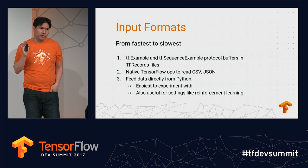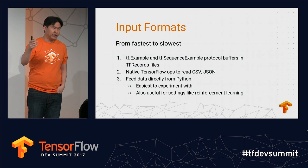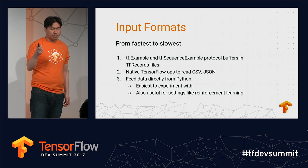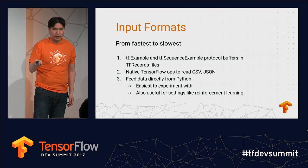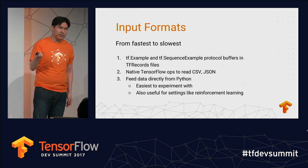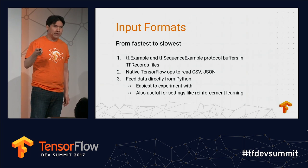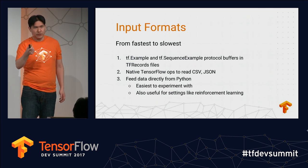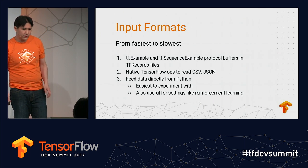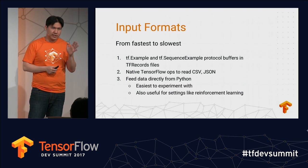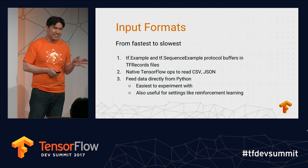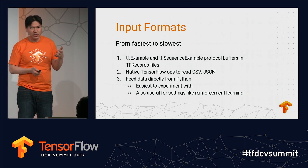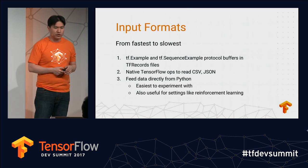More commonly, if you read examples of TensorFlow code on the web, people will be feeding data directly in Python. This is by far the most common and the easiest to experiment with. It also has the most flexibility — you can use any file format that Python natively understands and convert it to NumPy arrays, which can be fed as tensors. It's also useful for reinforcement learning, but it's also the slowest option. So if you're running experiments this makes sense, but if you're trying to productionize a pipeline, you might want to switch to TF records.